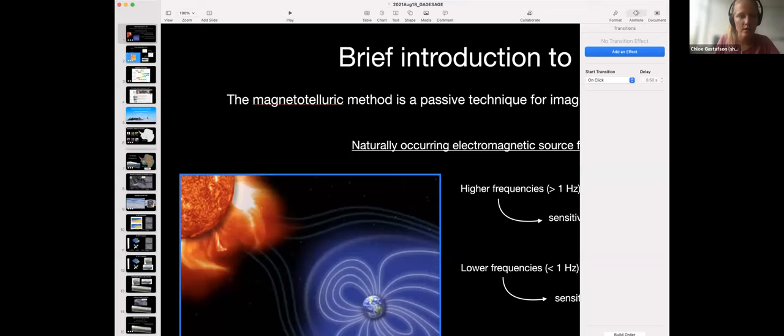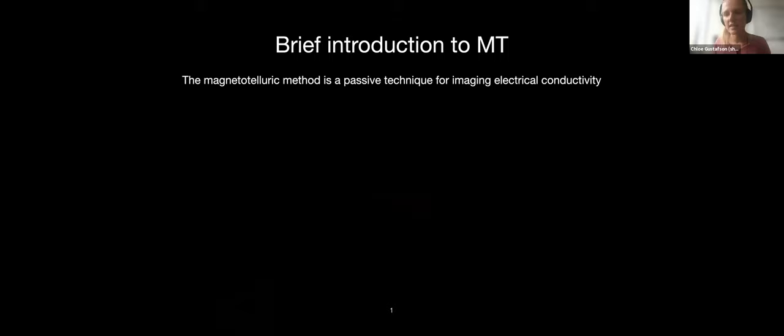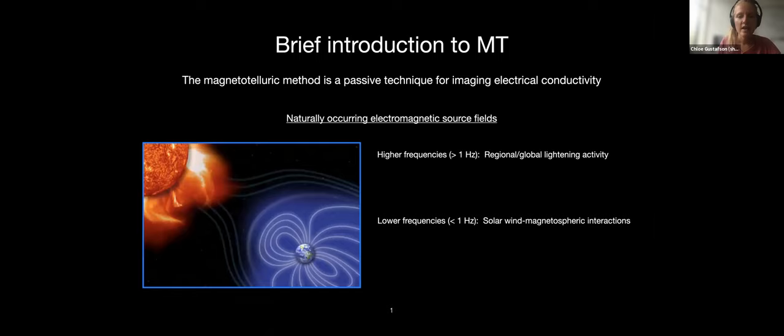The magnetotelluric method is a passive technique used for imaging electrical conductivity within the earth's subsurface. We use naturally occurring electromagnetic fields as our source fields. Higher frequency data comes from regional and global lightning activity, while lower frequency data comes from solar wind-magnetospheric interactions. Similar to seismic, higher frequency data is sensitive to shallow features whereas lower frequency data is sensitive to deeper features.